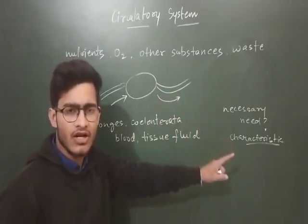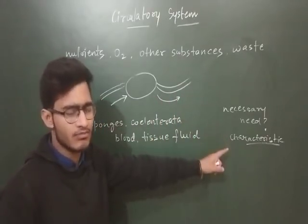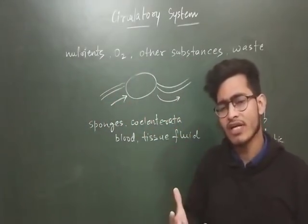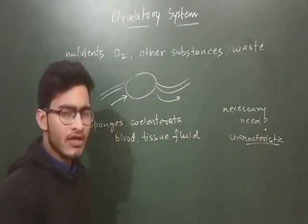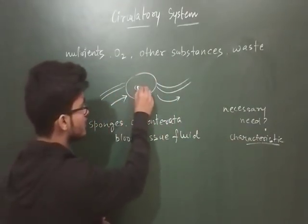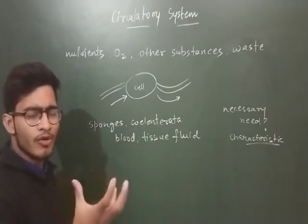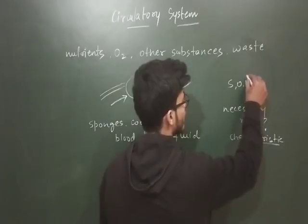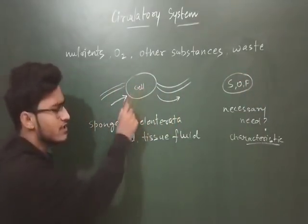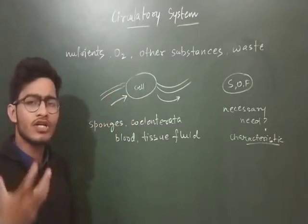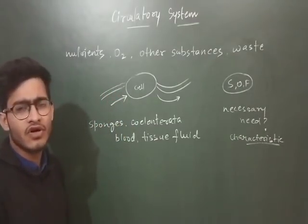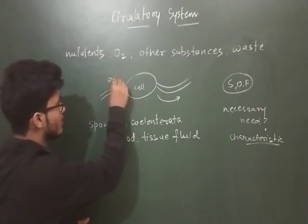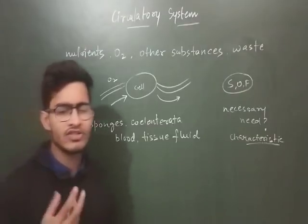That cell, for being in a living state, requires different kinds of things. So if this is a cell — or you can call it a tissue, which is a group of cells similar in structure, origin, and function — they constitute tissue. This cell or tissue requires different kinds of things for its proper functioning. For example, let's say oxygen — the oxygen is obviously required.